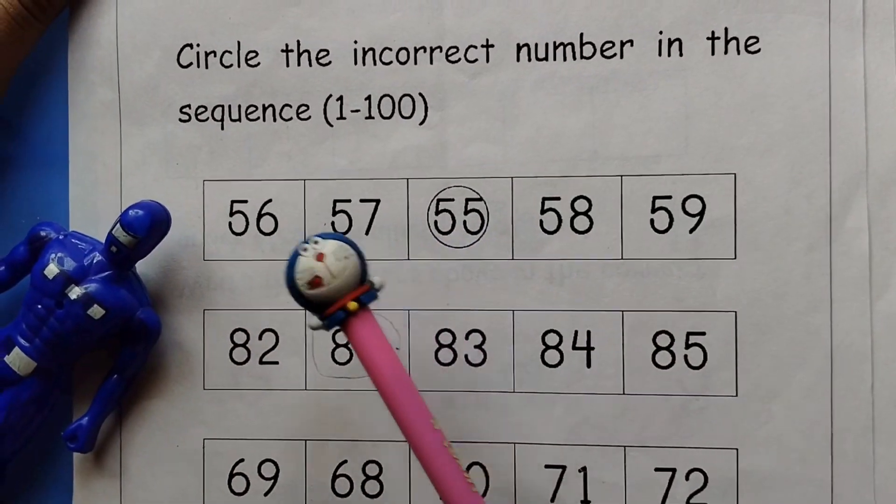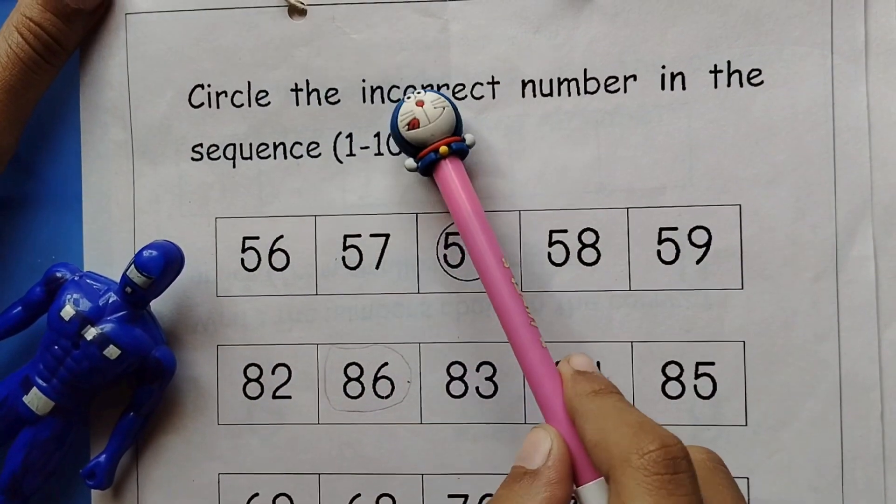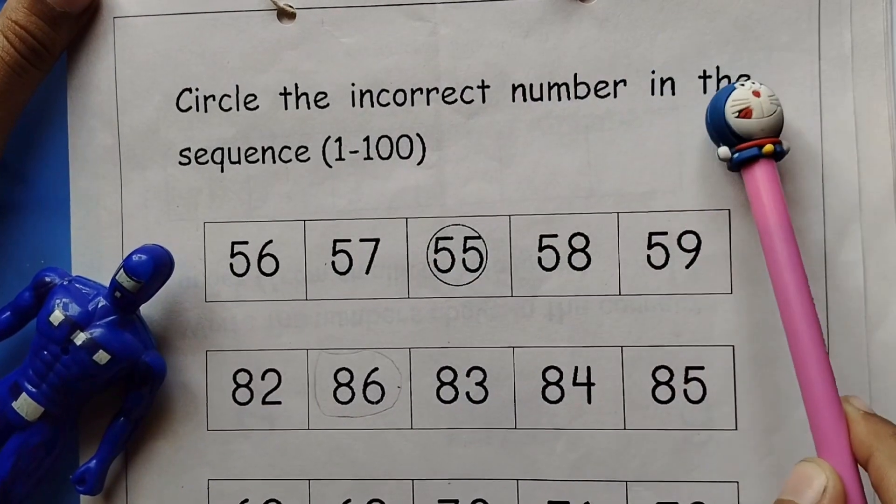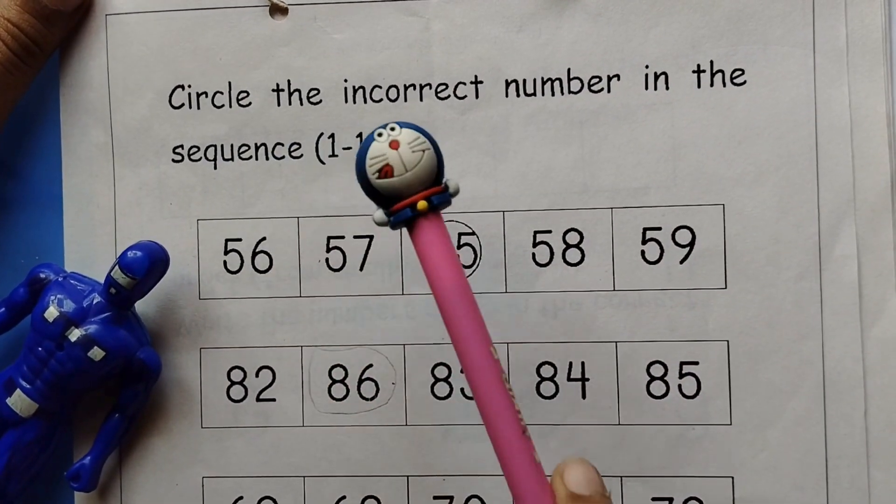Hi, friends. Circle the incorrect number in the sequence 1 to 100.